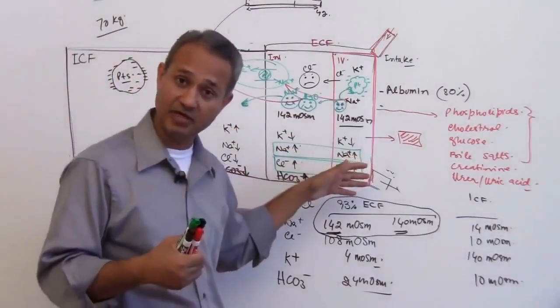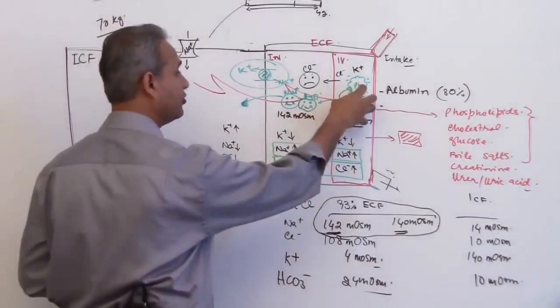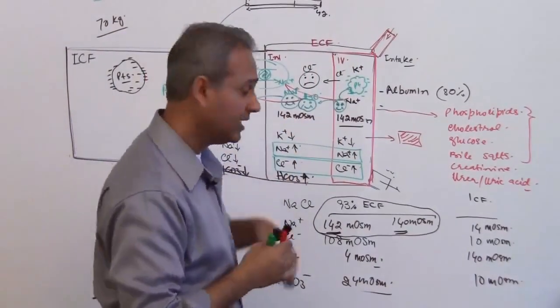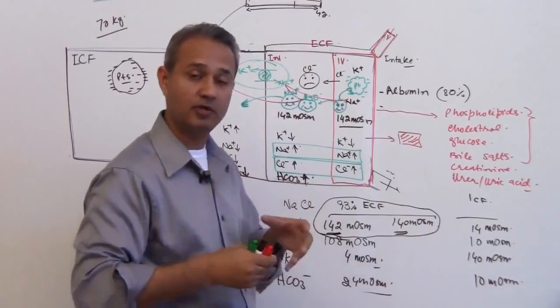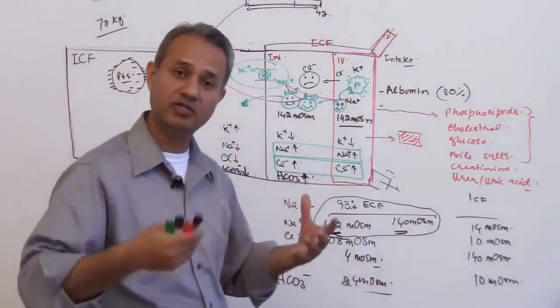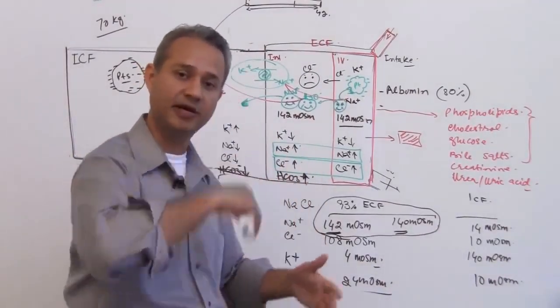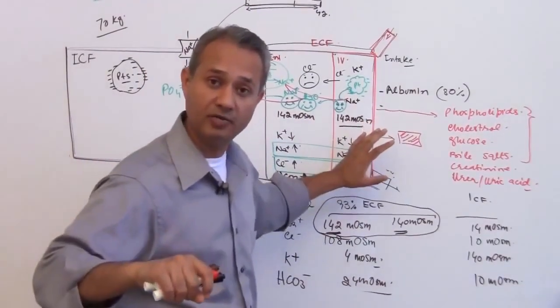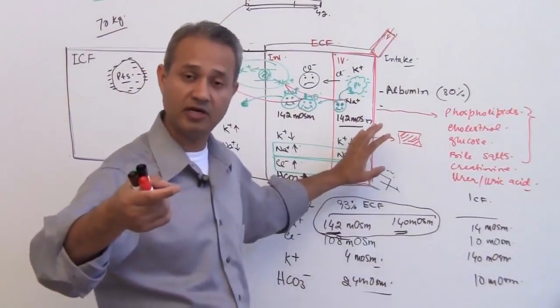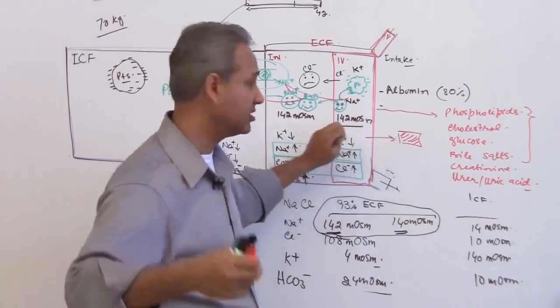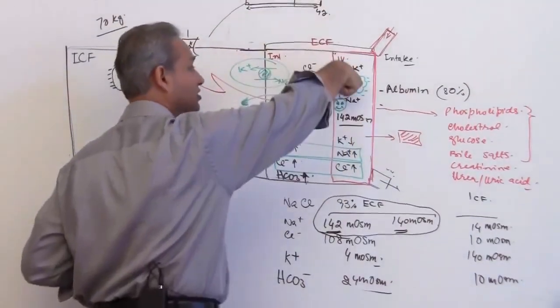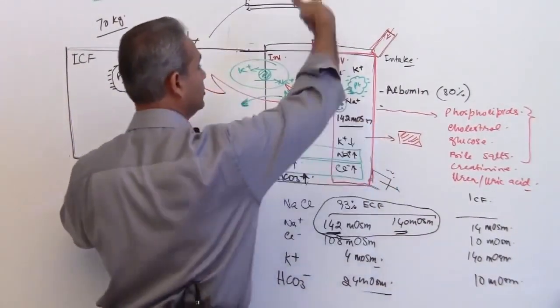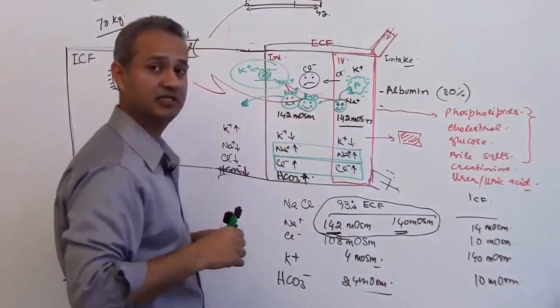On the other hand, pitting edema means when the fluid has moved from the intravascular system abnormally into the interstitial system and the interstitial system is not able to handle that fluid. There is so much of the fluid that lymphatics cannot take it back and the fluid cannot move back into the vascular system because either the hydrostatic pressure got altered or the oncotic pressure got altered. In this case, if you press on this tissue, the fluid is going to disperse out and when you remove the pressure it is going to come back. That is a pitting edema.